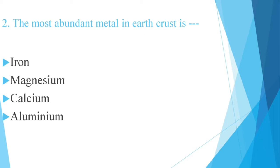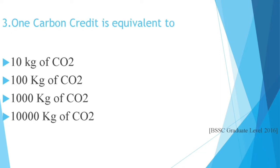Question number 3: One carbon credit is equivalent to 10 kg of CO2, 100 kg of CO2, 1000 kg of CO2, or 10,000 kg of CO2. This question is in BSSC Graduate Level 2016. The correct answer is 1000 kg of CO2.